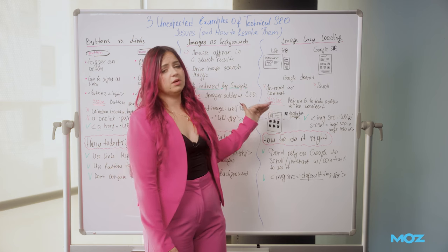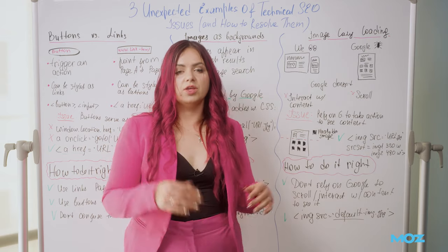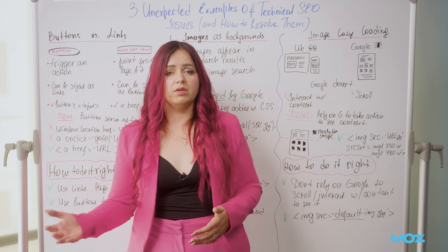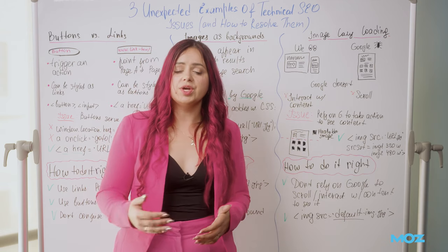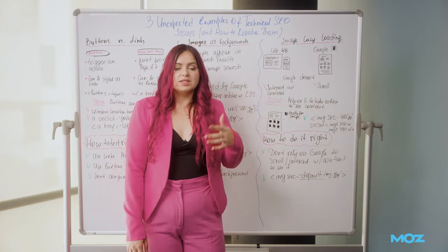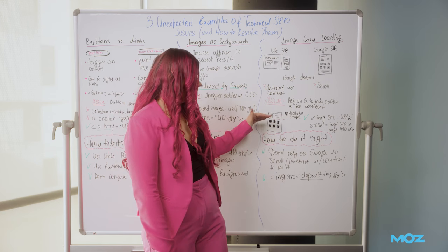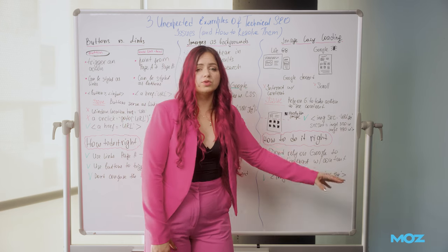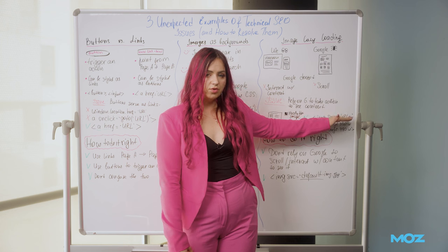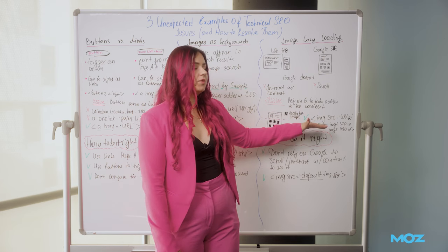A great example of this is when placeholder images get indexed instead of the normal images. A placeholder is a lightweight dummy image used below the fold so it doesn't impact page load speed. Once a user scrolls, it switches to the normal image — but Google doesn't scroll. So you need to make sure all images are visible to Google. Even if you use placeholder images, you always need a default image URL in the img src so Google can crawl, grab, and index it. You can also use srcset to list image files for different screen resolutions.